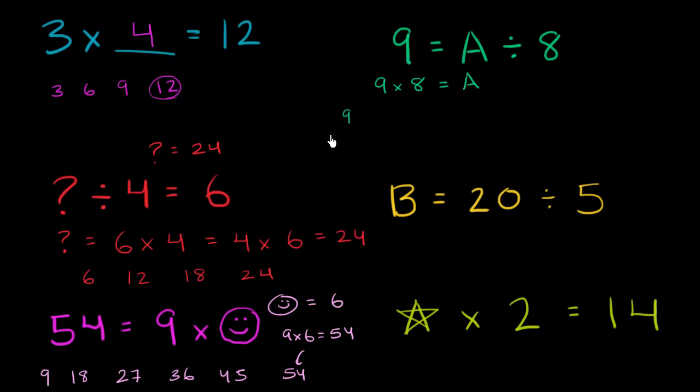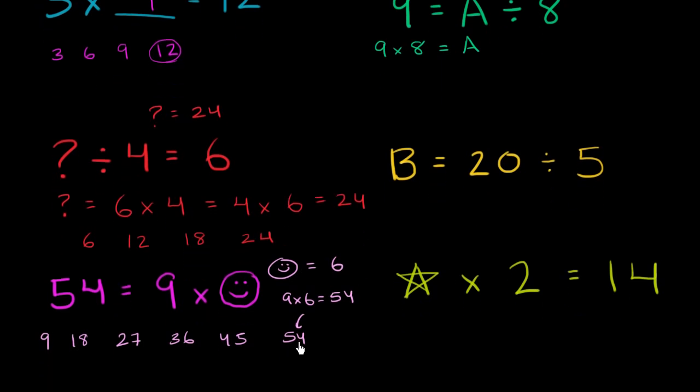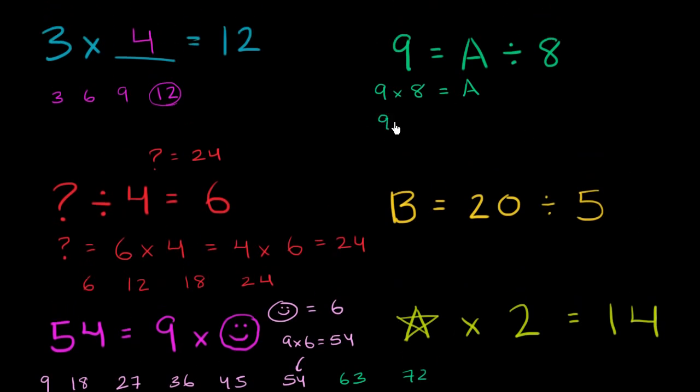Well, 9 times 1 is 9. In fact, we already did a lot of our 9 times tables down here. We could just keep going. 9 times 6 was 54, 9 times 7 is 63, 9 times 8 is 72. So 9 times 8 is equal to 72. So we can say that A is equal to 72. And if A is equal to 72, then this equation becomes 9 is equal to 72 divided by 8, which is absolutely true. 72 divided by 8 is 9. 9 times 8 is 72.